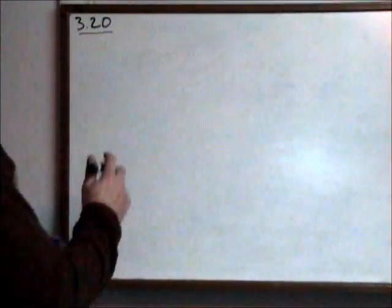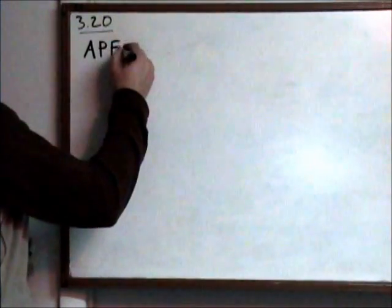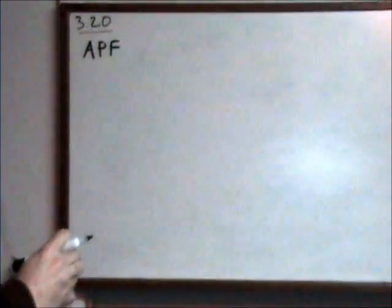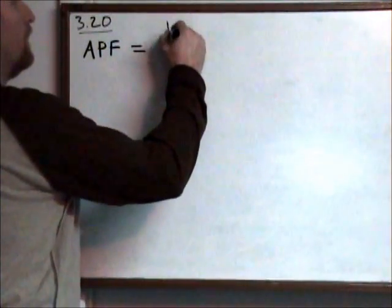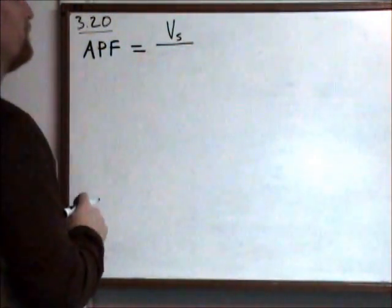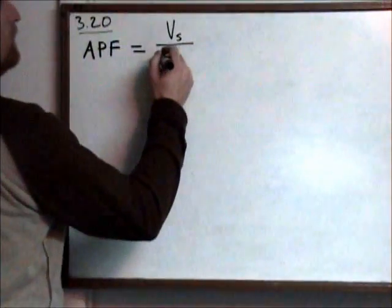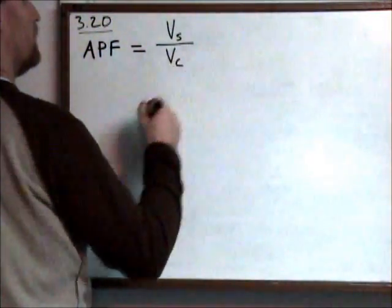Problem 320 asks us to calculate the atomic packing factor of diamond. The atomic packing factor is the ratio of the volume of the spheres of the atoms divided by the volume of the actual cell.